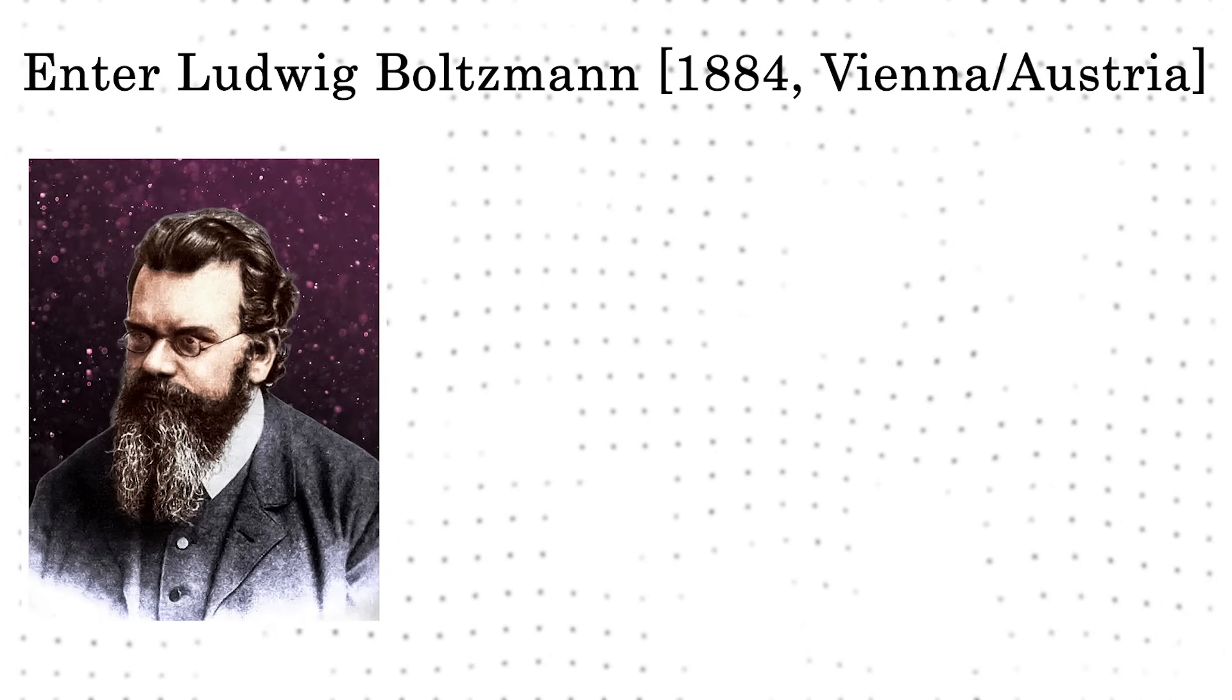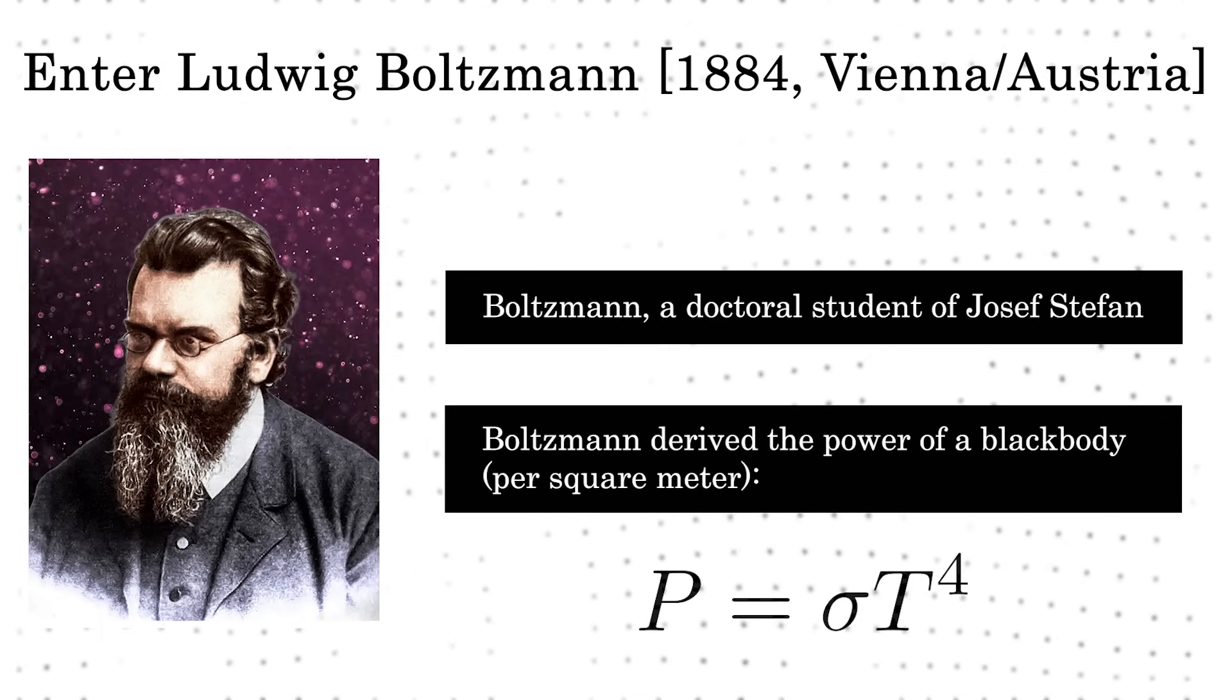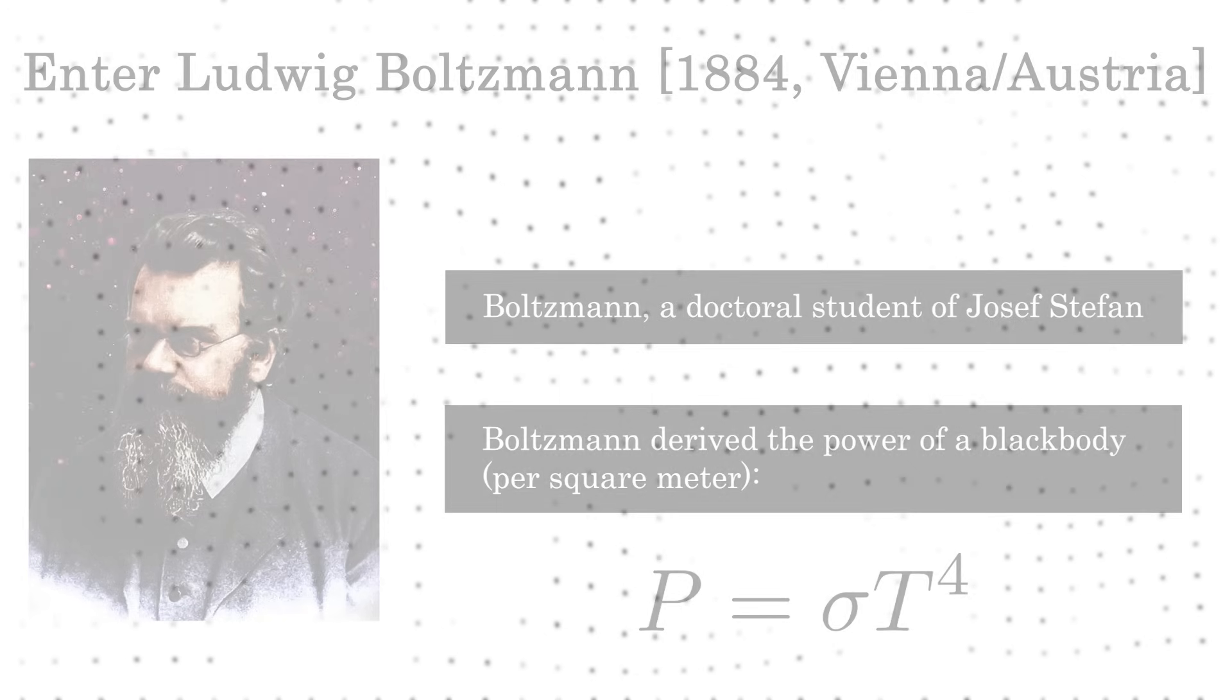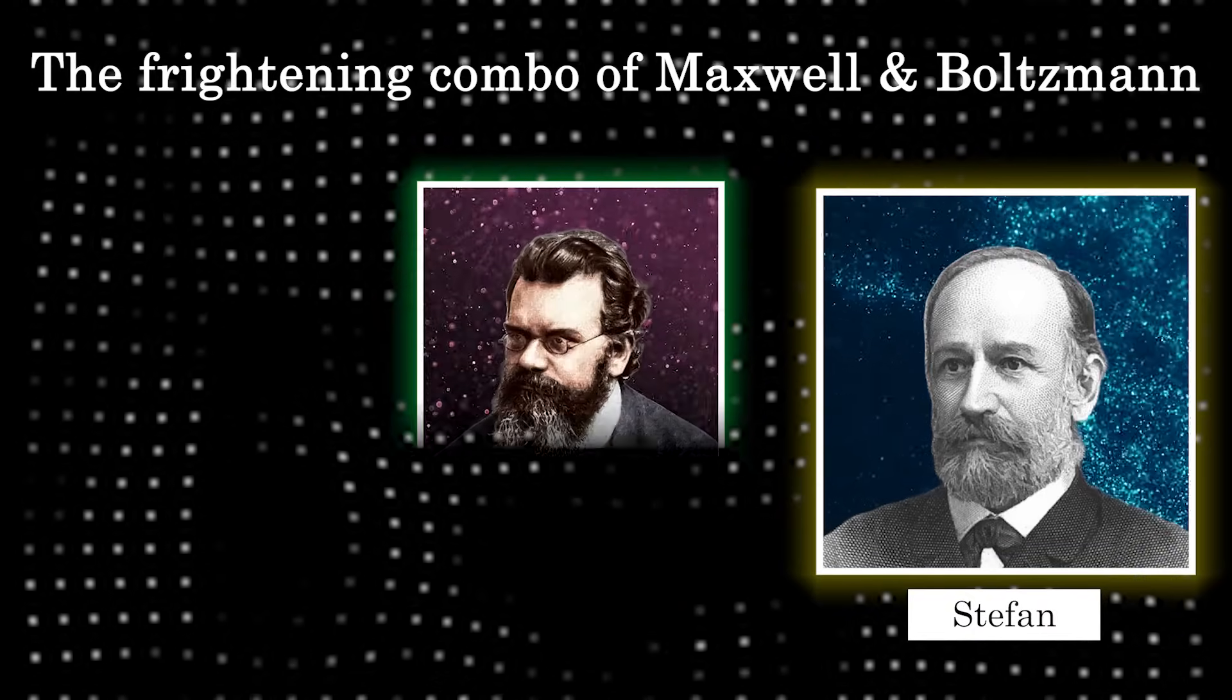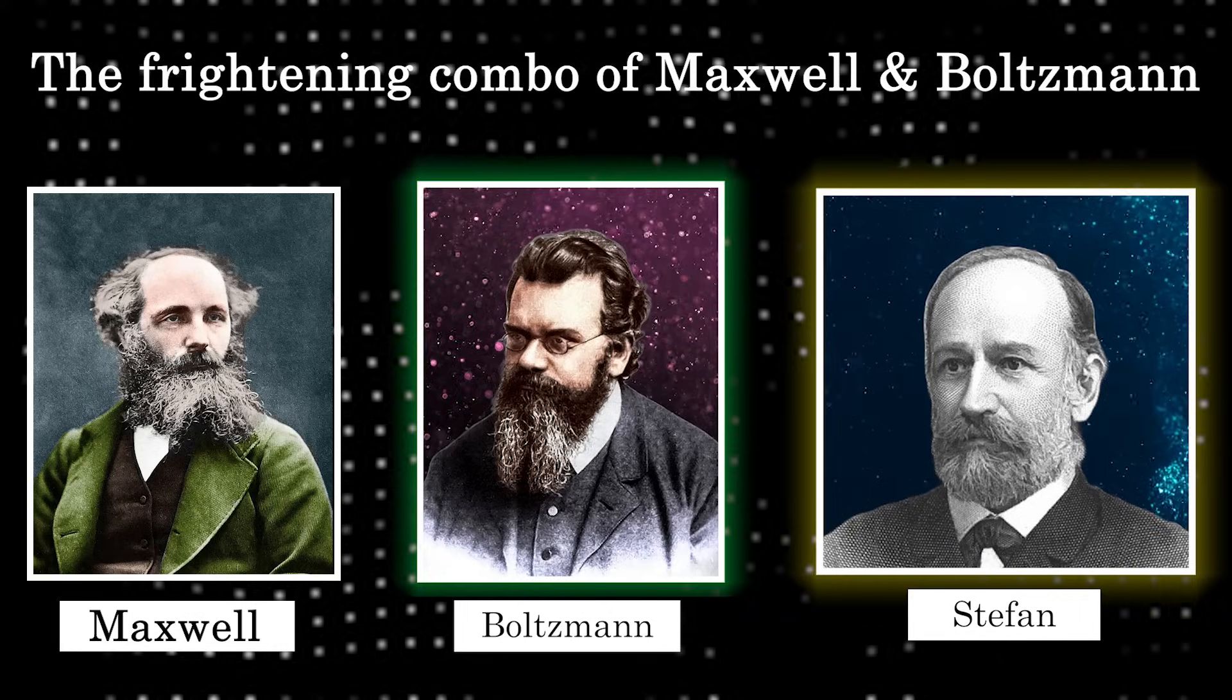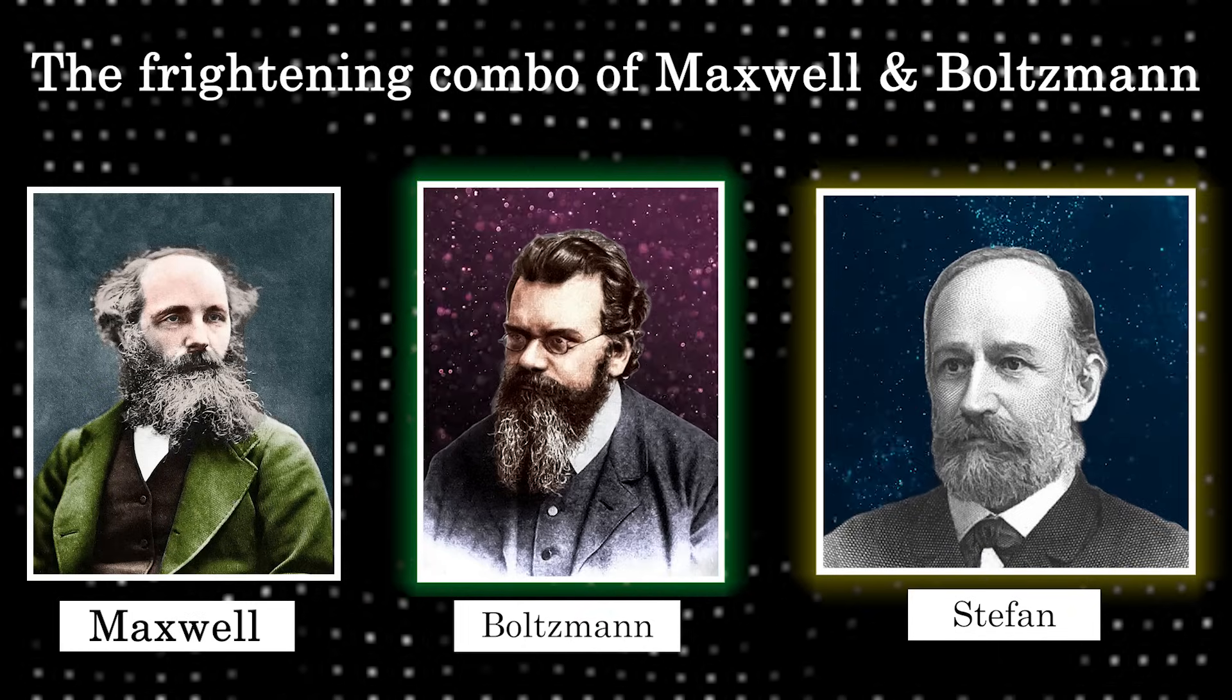In 1884, Stefan's formal doctoral student, Ludwig Boltzmann, published a thermodynamic derivation of Stefan's empirical law. The constant sigma is known as the Stefan-Boltzmann constant and cannot be directly obtained from purely classical mechanics. Interestingly, it was in fact Stefan who introduced Boltzmann to the work of Scottish physicist Maxwell on the kinetic theory of gases. Boltzmann would go on to dedicate his long and distinguished career to developing and expanding this theory.